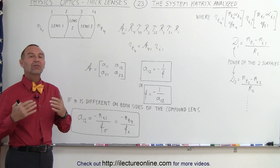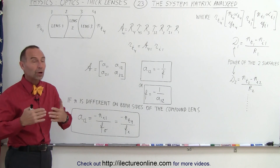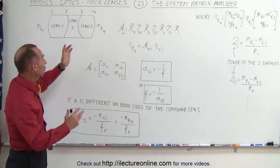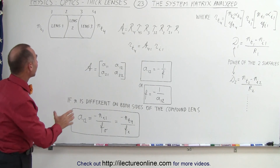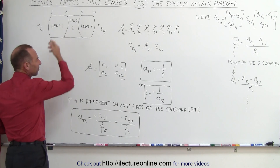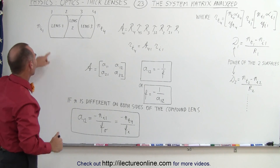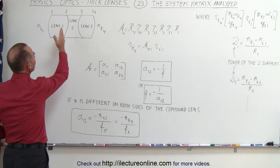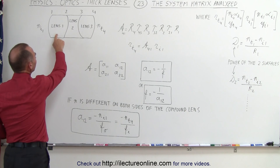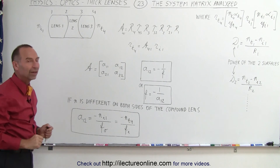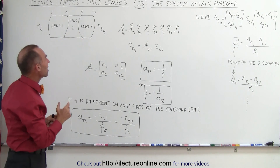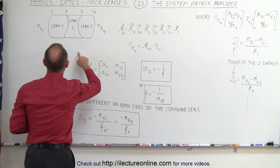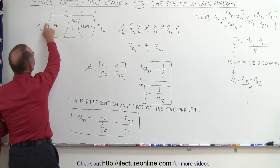Quite often lenses are put into lens systems, or what we call compound lenses. Here in the example we have three lenses glued together or held together. You don't want to put some material in there that would mess up the rays going through the lens system, so you want to put them together and make sure you have clean boundaries between them. Nevertheless, here we have three lenses, and the system matrix represents all the matrices required to calculate what happens to an incoming ray.